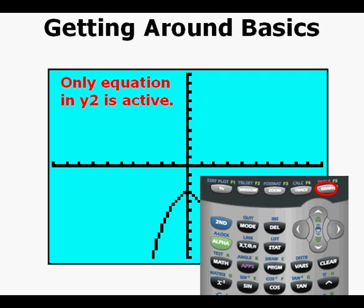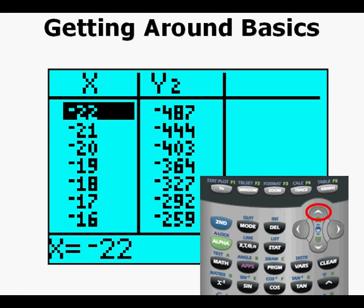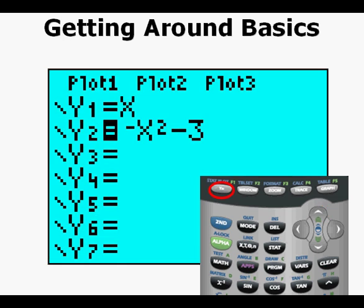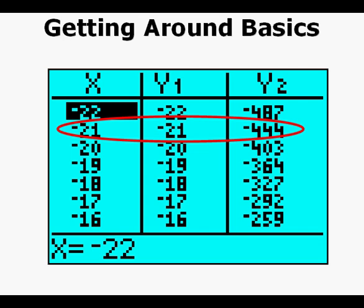Now we'll see something else. We'll get ready to go to the table view by pressing second, then graph. We can press the up arrow and scroll upward as we've done here, or downward by pressing the down arrow. We press the y equals key and go back to the function editor. We go back up to y1 and reactivate it so the equal sign is now highlighted. We'll go back to the table again by pressing second, then graph to get to the table view. Now we can see both functions in table form and we can see that for an input value of negative 21, y1 has an output value of negative 21 and y2 has an output value of negative 444.